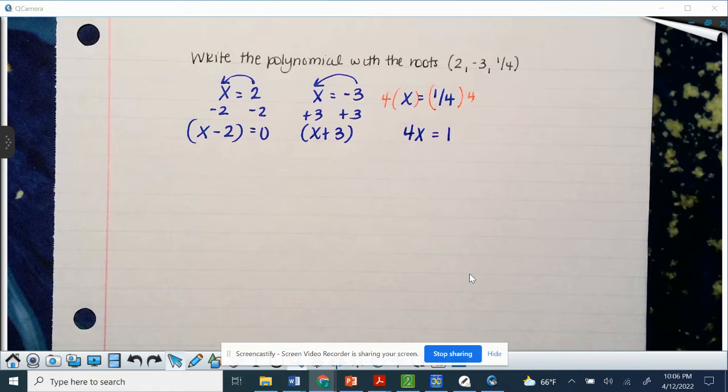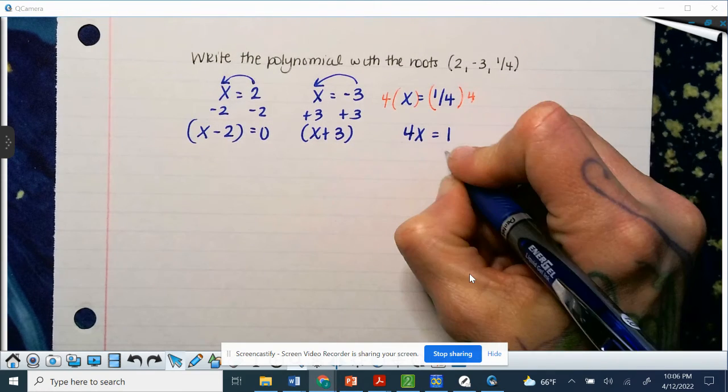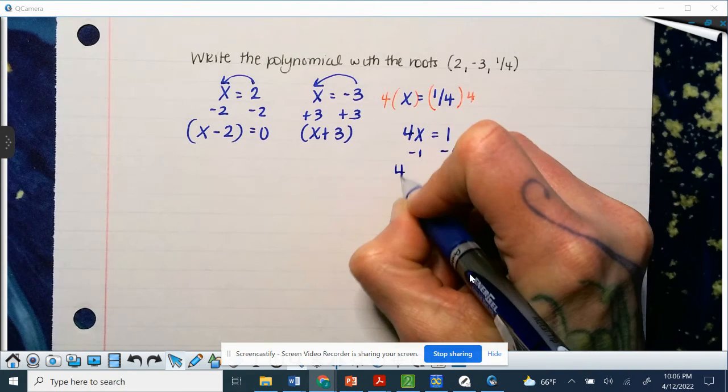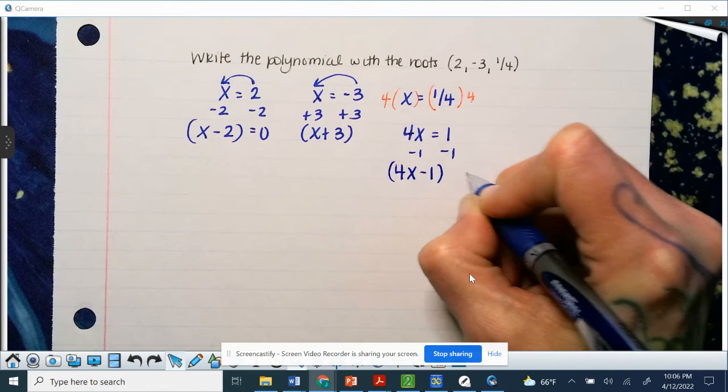A lot of you did that on the quiz, but you cannot have fractions as your factor. So we still need to keep going, so we're going to subtract 1 from both sides. So that's going to be 4x minus 1, and now it equals 0.